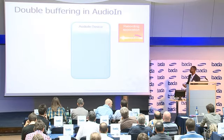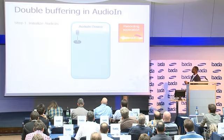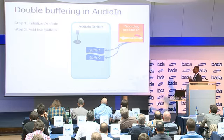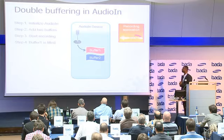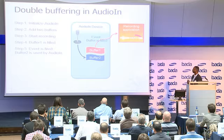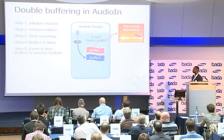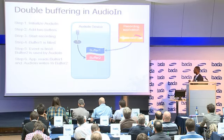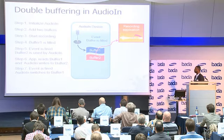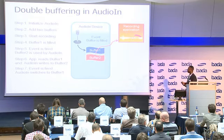Let's have a look at double buffering visually. Imagine we've initialized an Audio Input device — our recording application can supply two buffers to which the Audio Input device can record data into. We instruct the Audio Input device to start recording to buffer one. At some point in time, buffer one will be filled, and it will send an event to our application. We can then instruct the Audio Input device to start recording to buffer two. While recording to buffer two, our application can manage and make use of the data contained in buffer one. Recording to buffer two continues, and at some point buffer two will be filled, sending an event to our application, and we instruct recording back to buffer one. It's quite a common technique.